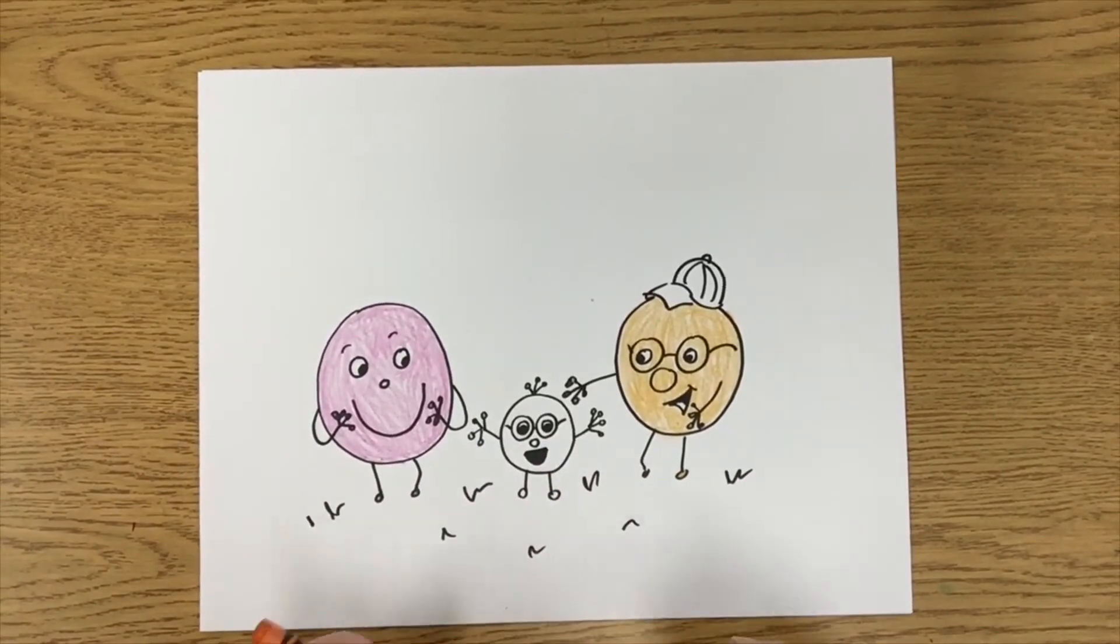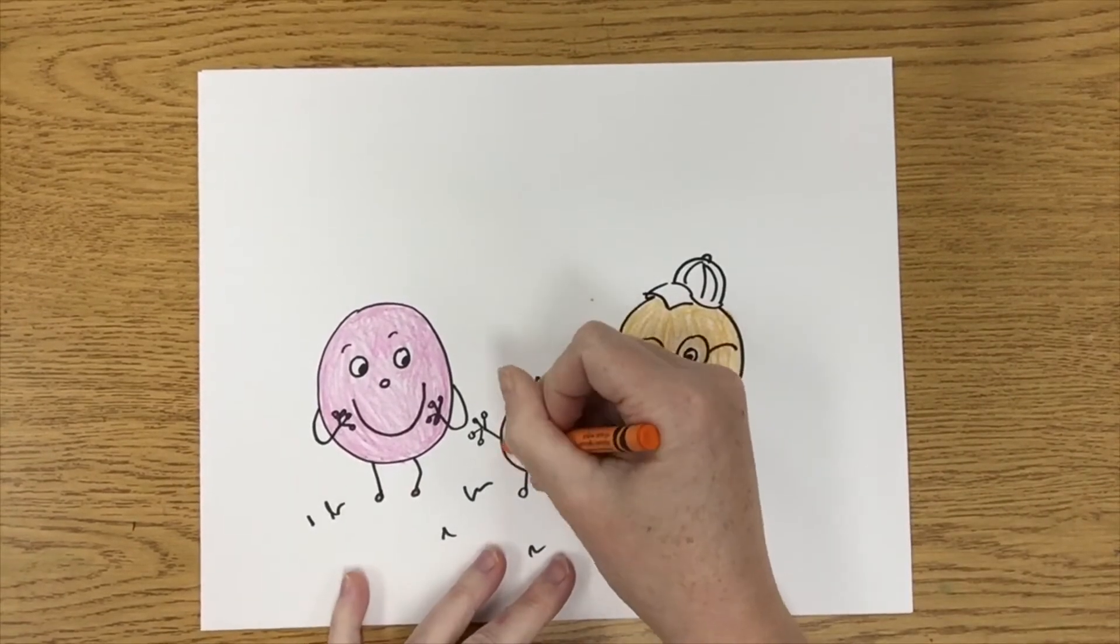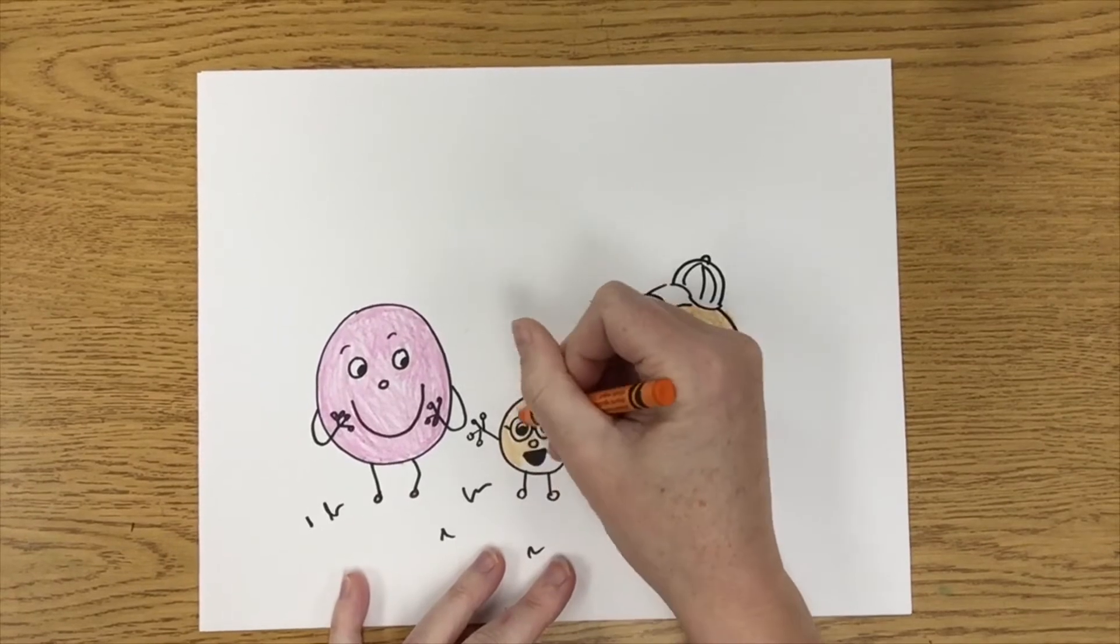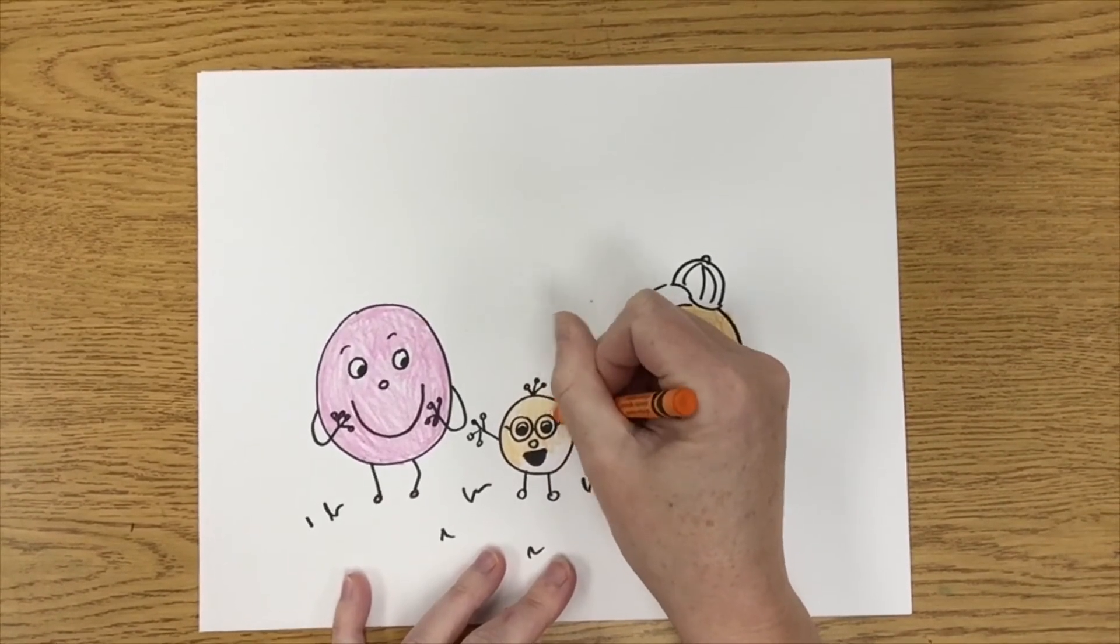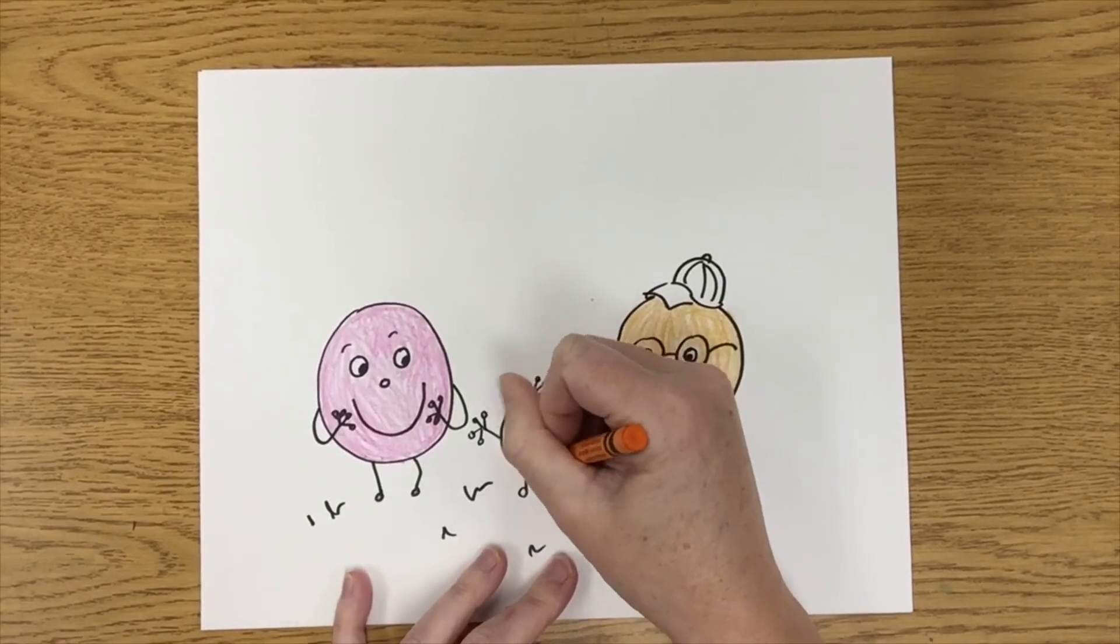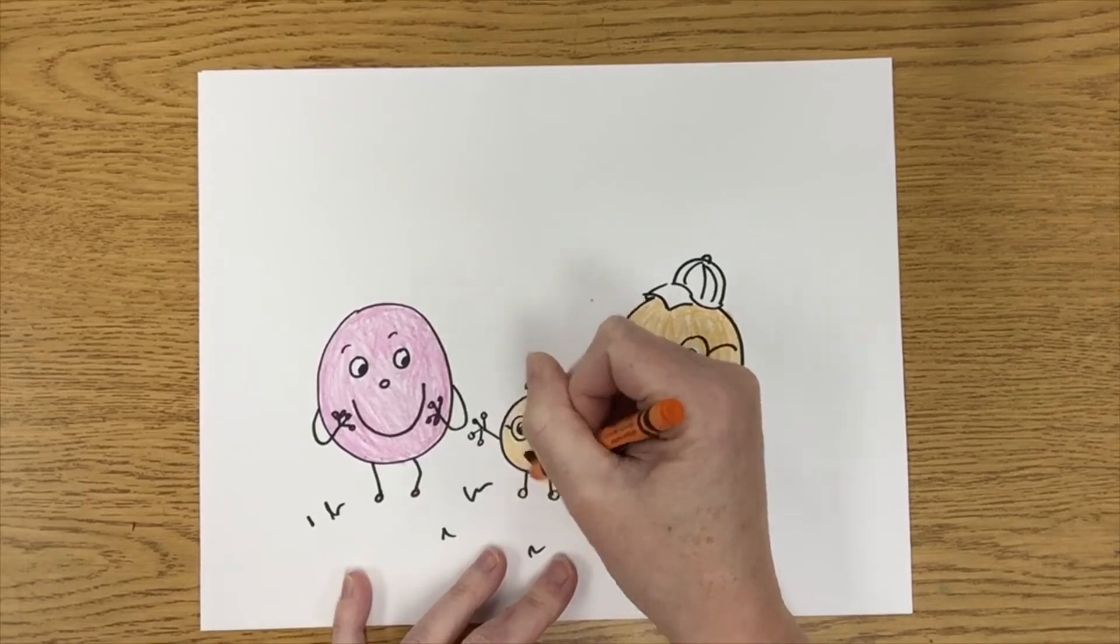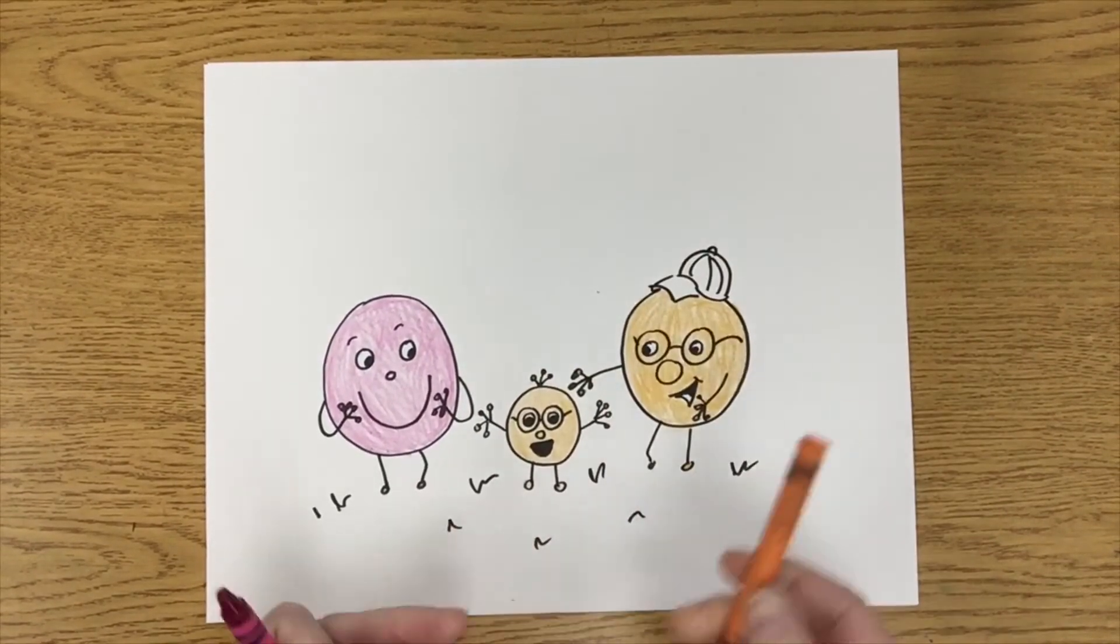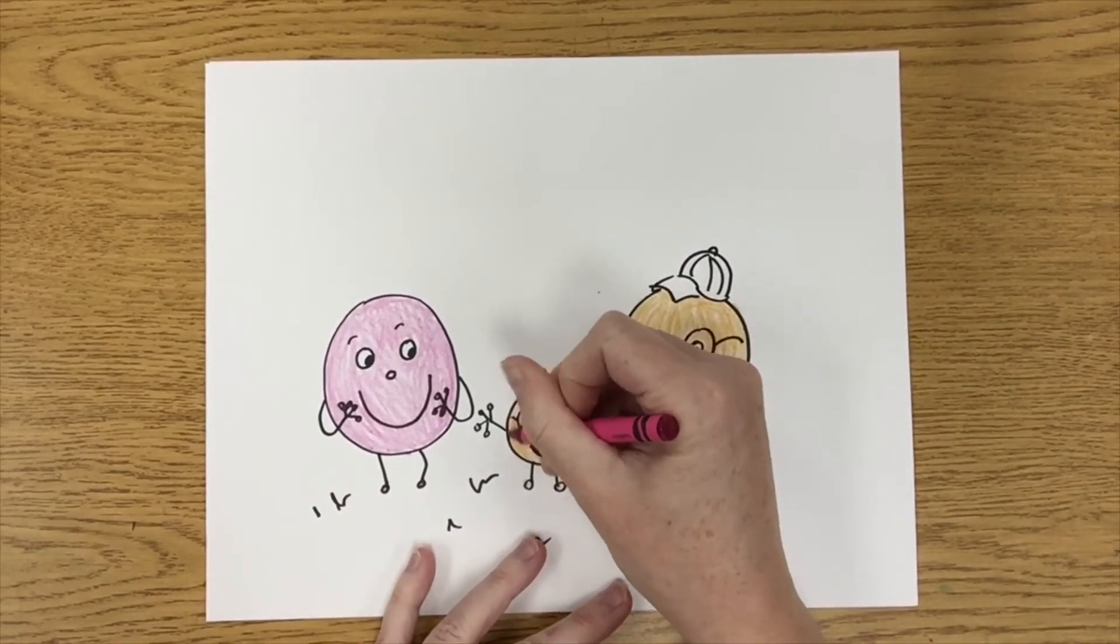Now my tip when you're mixing crayons to make a new color is that you start off coloring lightly with the crayon, so that means I'm not pushing down super hard. I'm just kind of softly pushing down as I color. All right, once I do one color, I then do the next, again pushing softly.